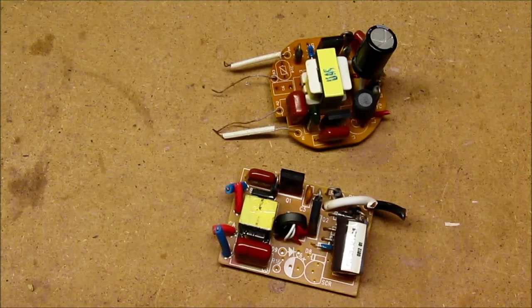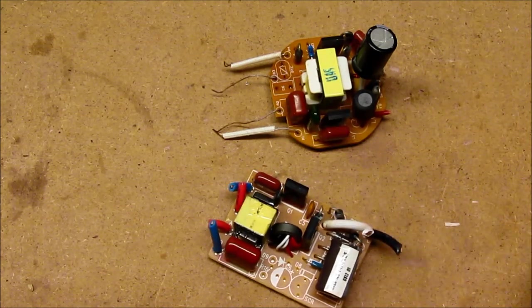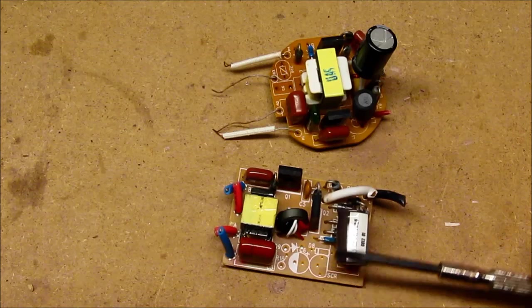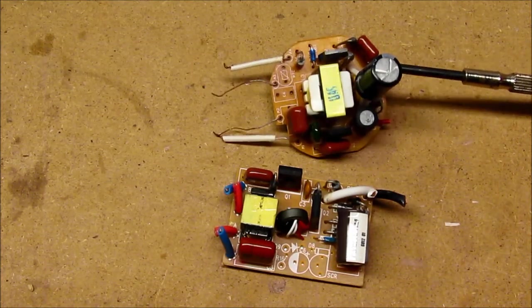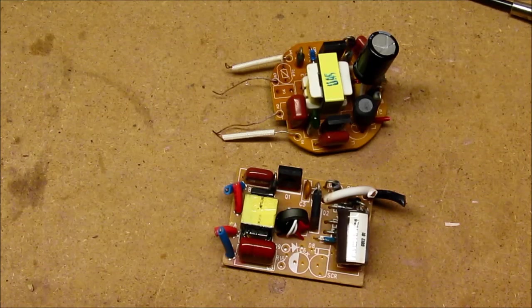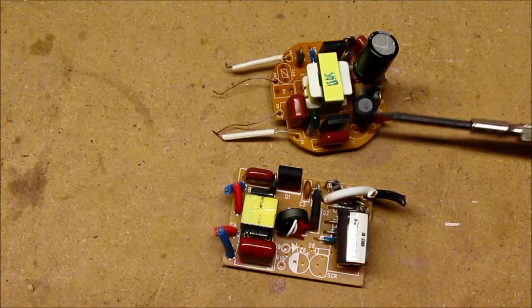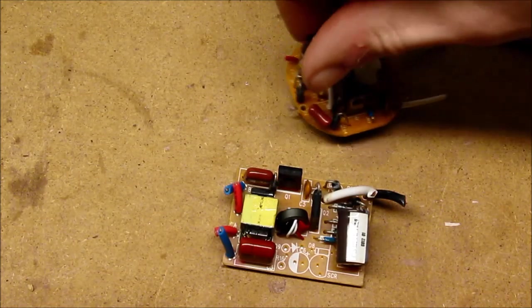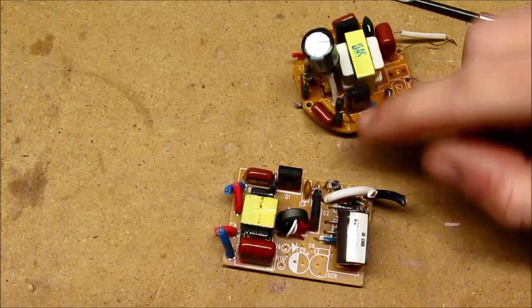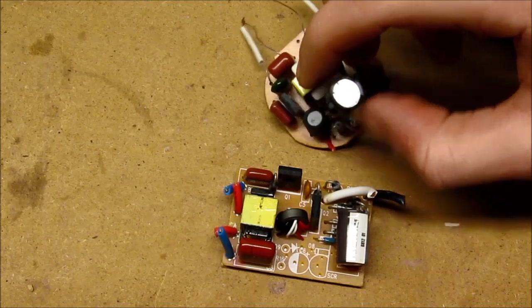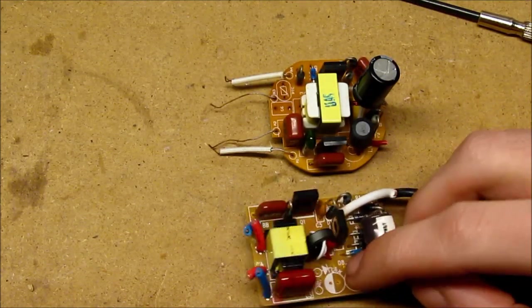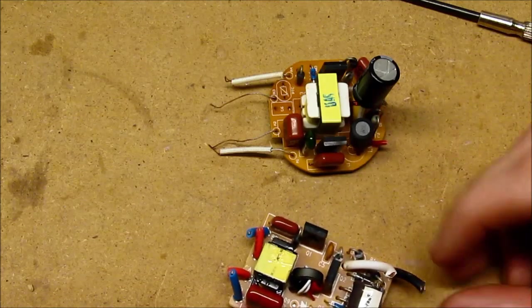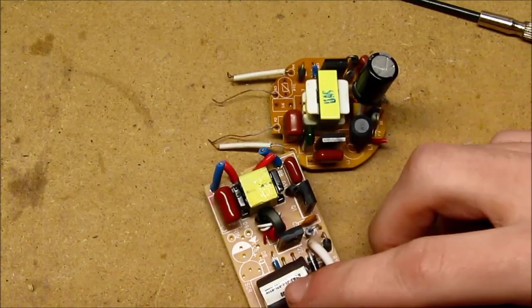Side by side comparison of the failed electronic ballast from the F15T8 fixtures and the CFL ballast that I'm going to be replacing it with. The CFL ballast has an inductor and this little capacitor there for input noise filtering. The ballast from the fixtures that died does not. There's no filtering, goes straight to rectifier and reservoir cap.